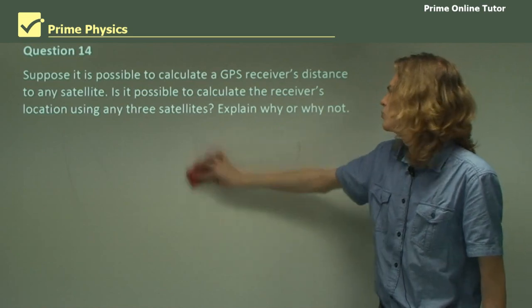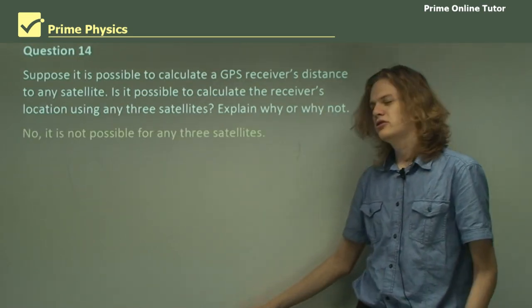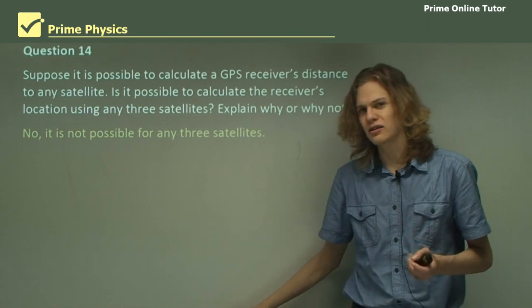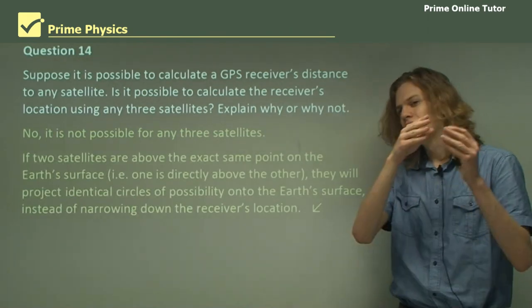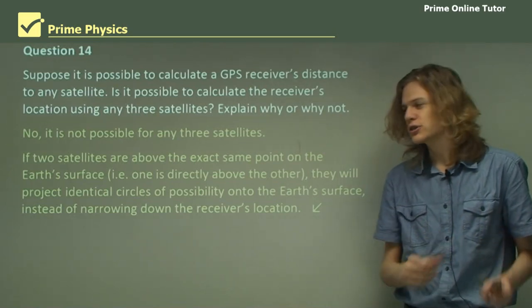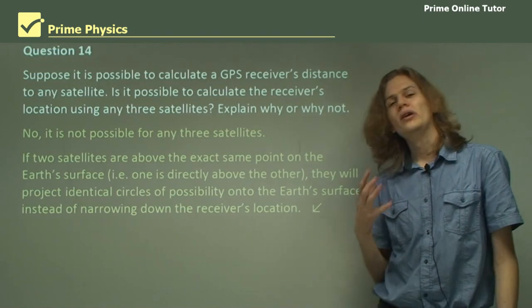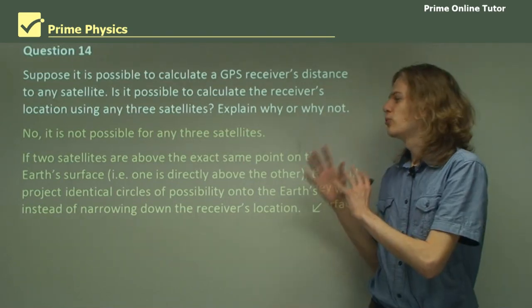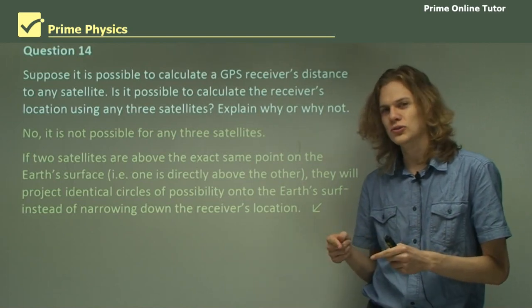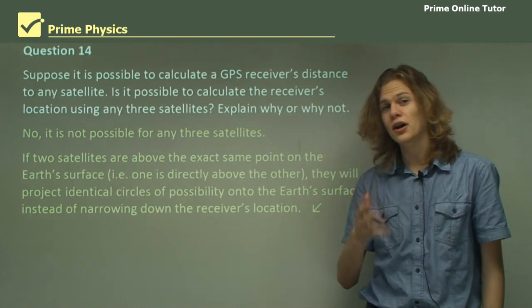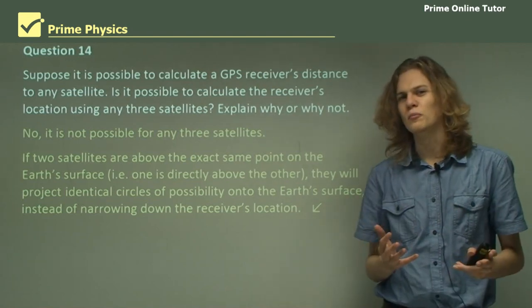So we need to make a bit of an amendment to how trilateration works. We can't just use any three satellites. If we have two satellites that are over exactly the same location on the Earth's surface, then we won't be able to get this to work. What we need to have is three different satellites that are at different locations on the Earth's surface. And as long as we satisfy that criteria, we should be able to get the trilateration working properly.